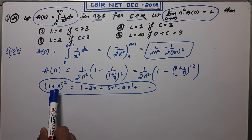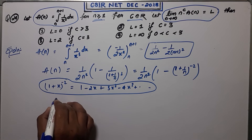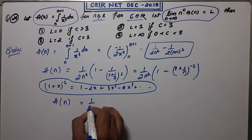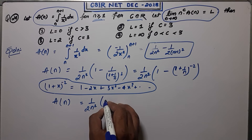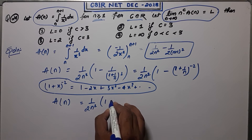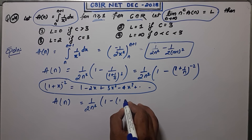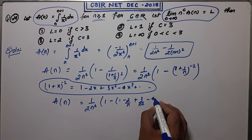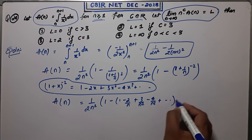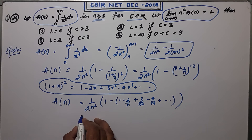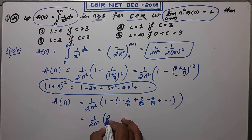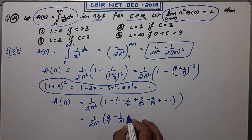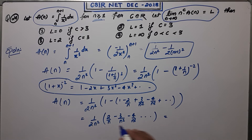Applying the expansion, a_n equals 1/(2n²) times [1 - 2/n + 3/n² - 4/n³ + ...]. Distributing, you get 1/(2n²) times [2/n - 3/n² + 4/n³ - ...]. Factoring out 1/n gives 1/(2n²) · (1/n) · [2 - 3/n + 4/n² - ...].